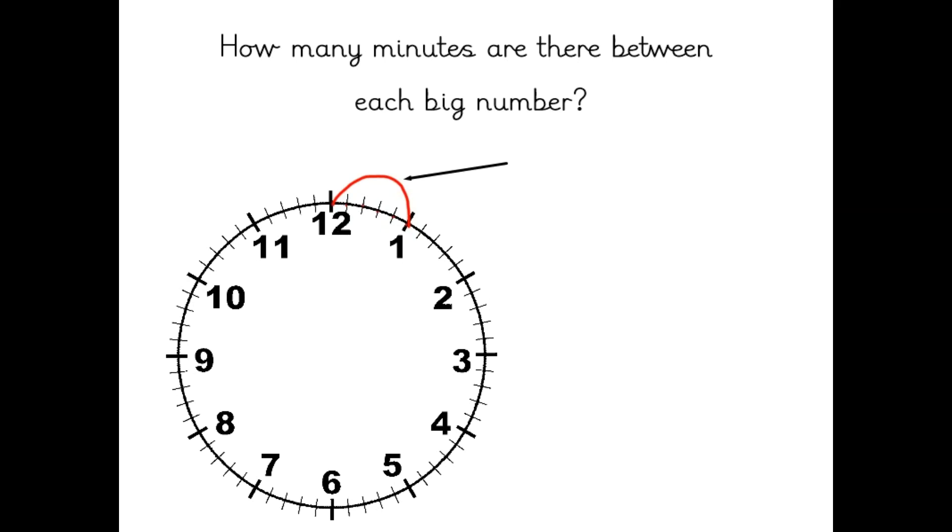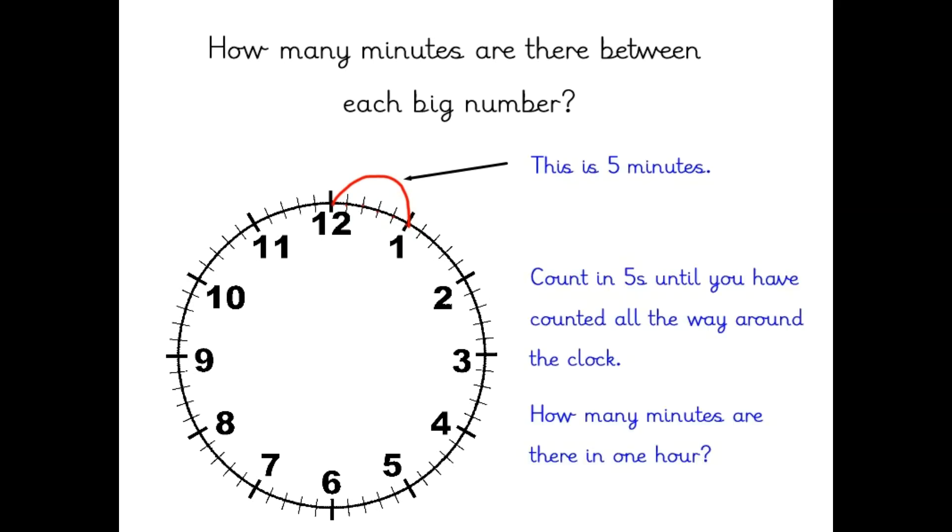If each small line represents one minute, how many minutes are there between each big number on a clock face? There are five minutes in between each large number. Now I would like you to count in your fives, jump all the way around the clock using your finger until you've reached the 12 again. And this way you can work out how many minutes there are in one hour.